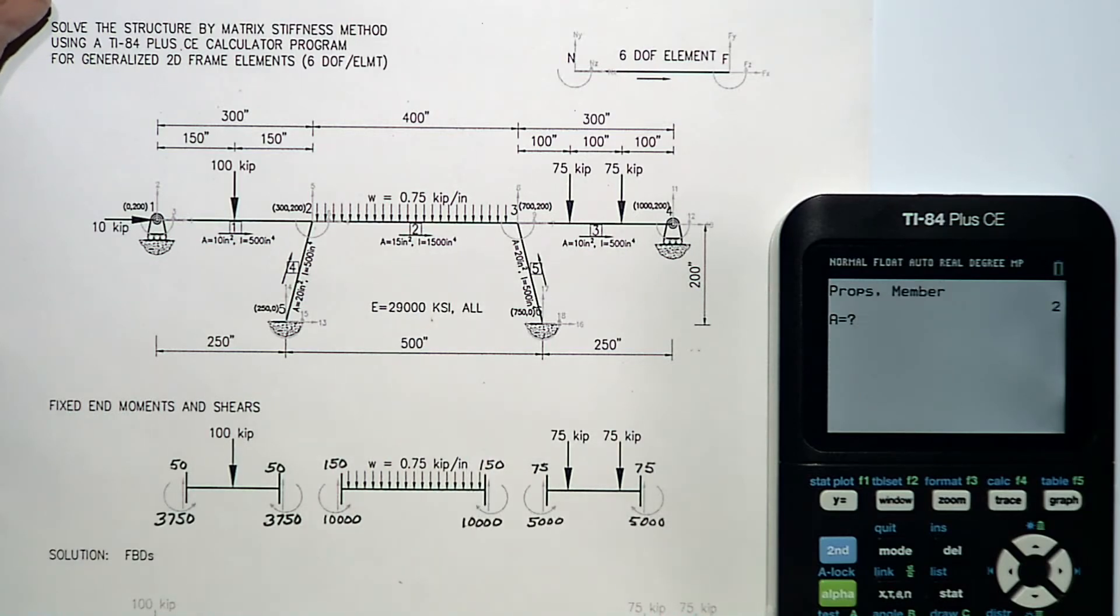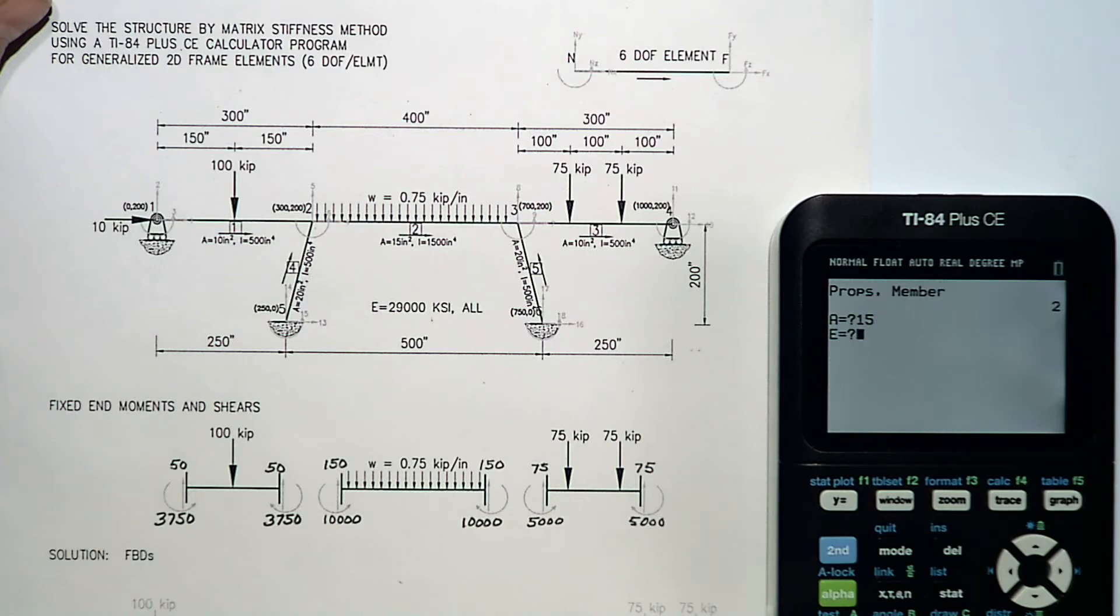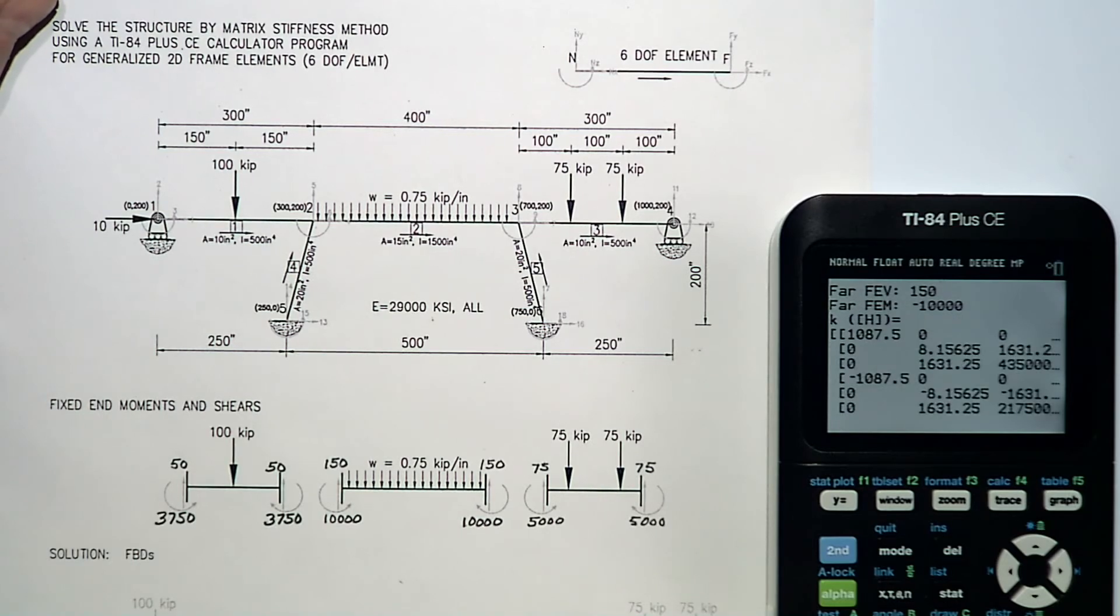Member two has an area of fifteen. Twenty-nine thousand is my modulus of elasticity. Moment of inertia of fifteen hundred. Fixed end shear is one fifty. Fixed end moment is ten thousand. Fixed end shear at the far end is one fifty. And negative ten thousand is my far end clockwise fixed end moment. There is that member stiffness matrix.